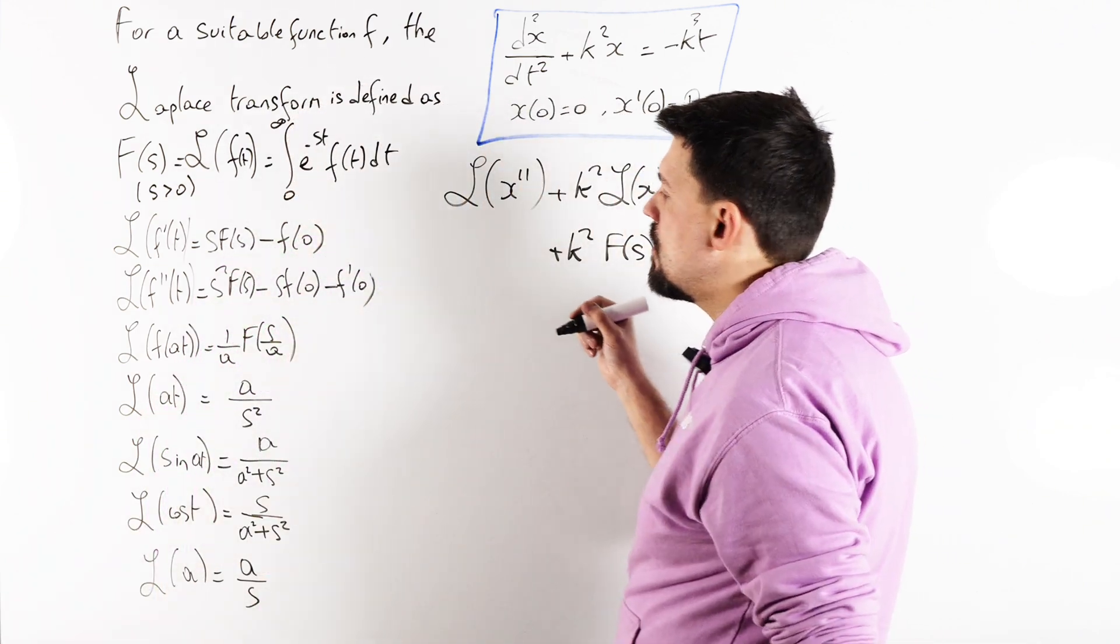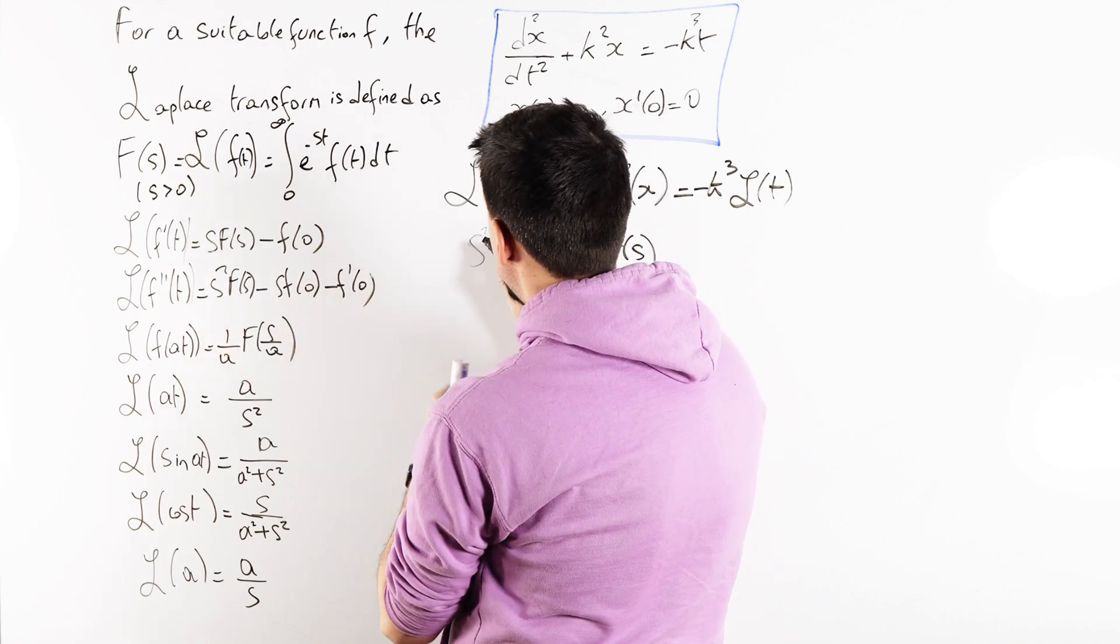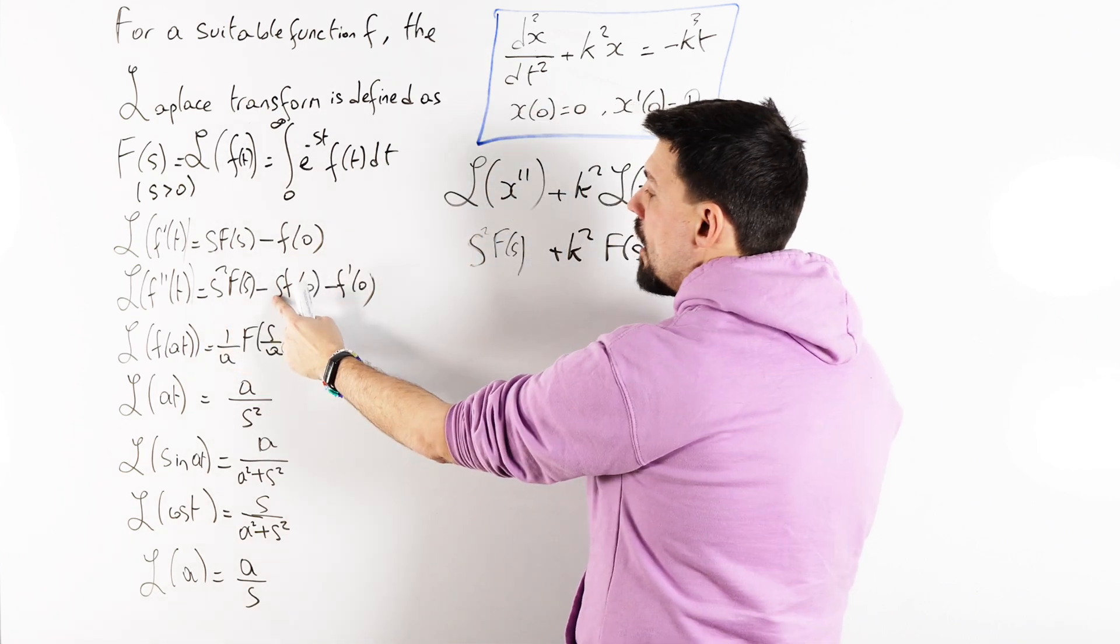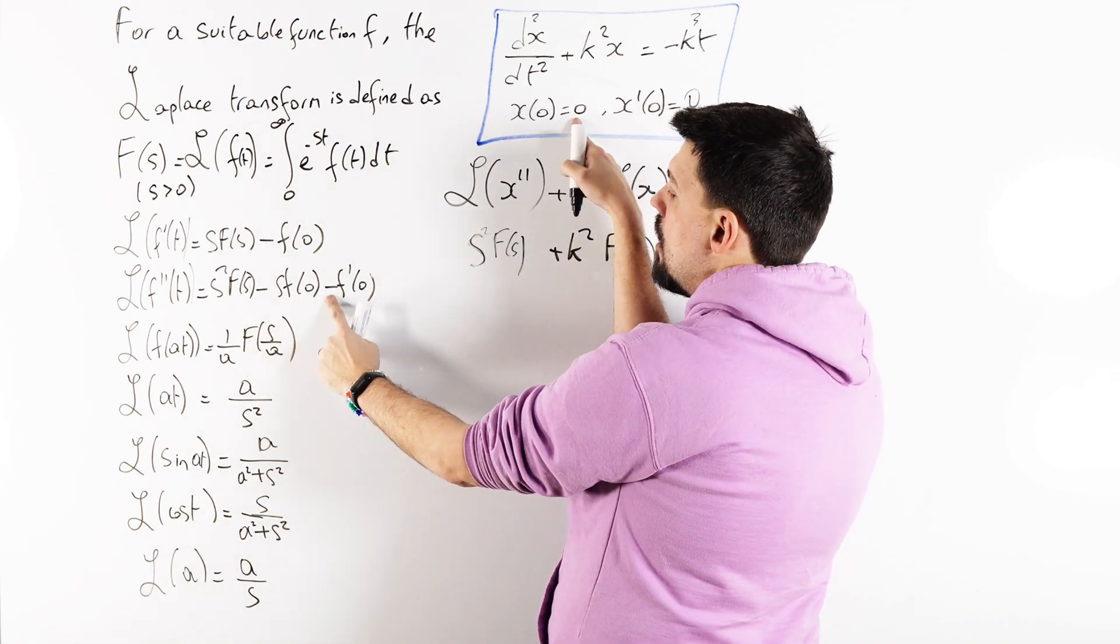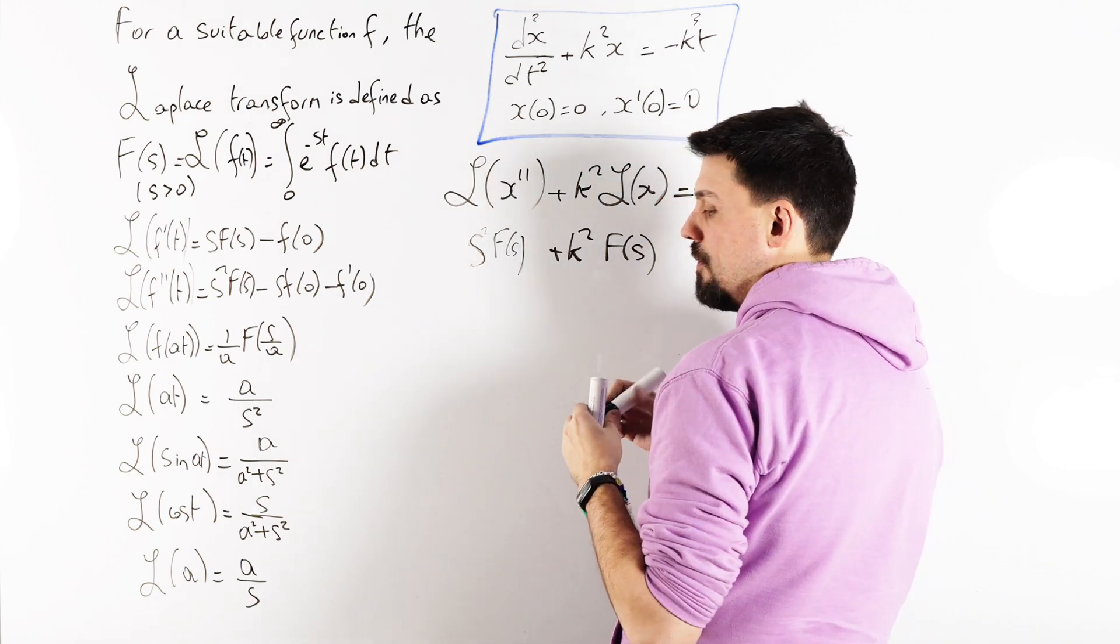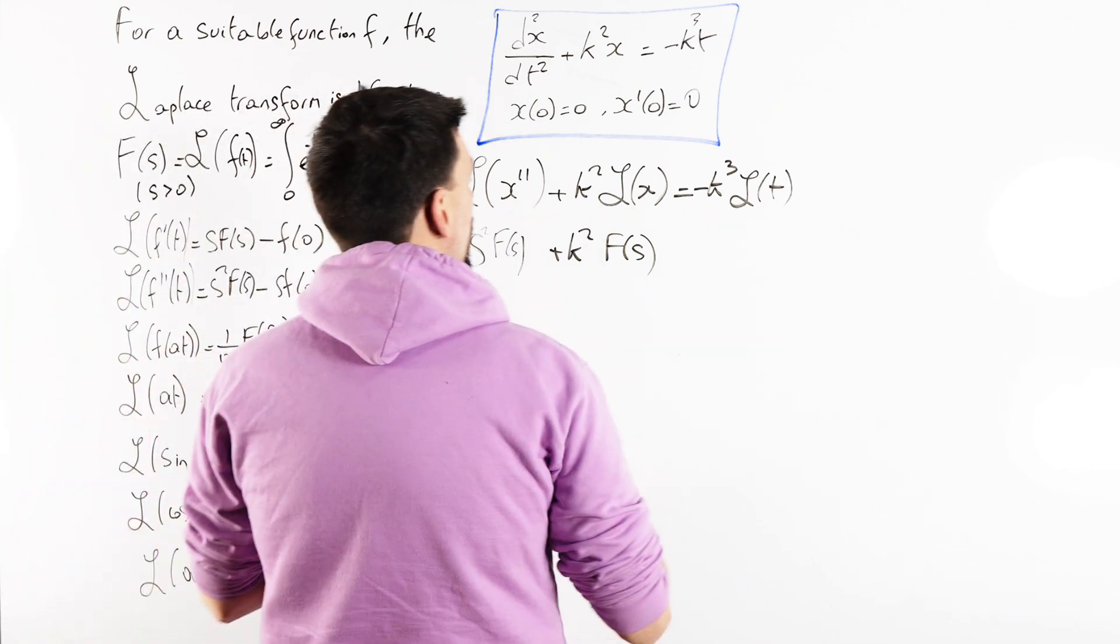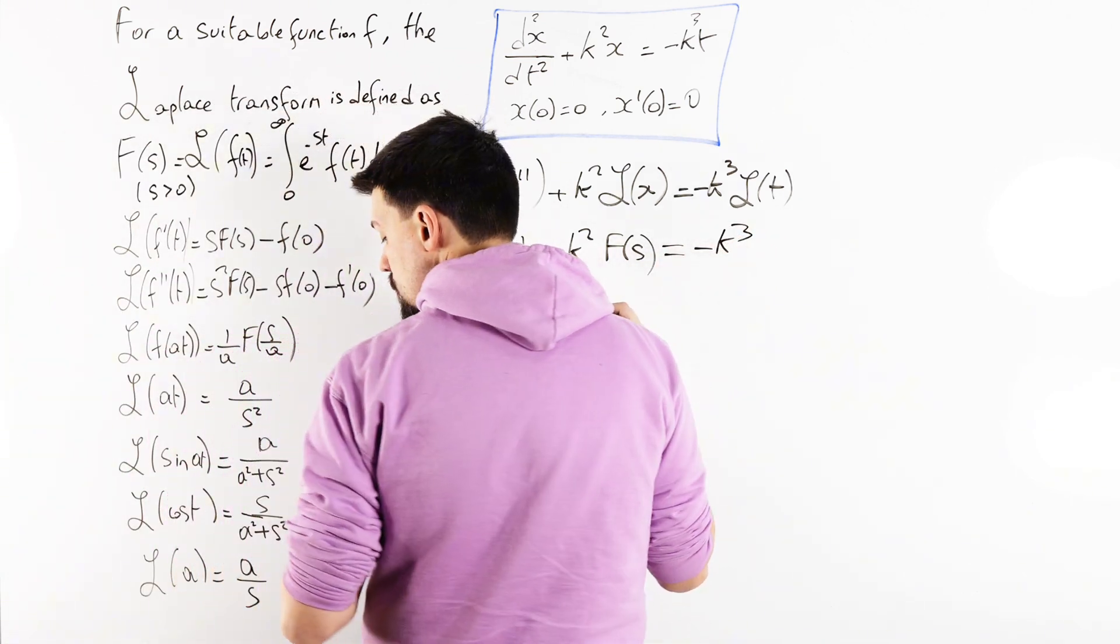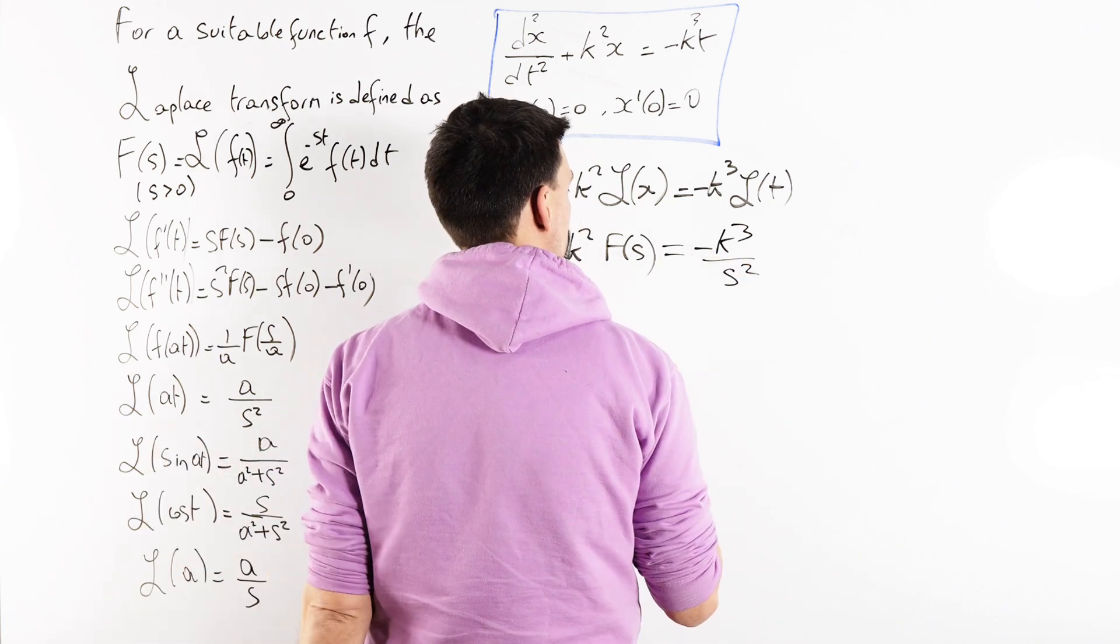Now, Laplace transformation of x double dashed is s squared f of s minus s times the function at zero, but the function at zero is zero, minus the gradient of the function at zero, which is just zero. So we just get s squared f of s. This pen is dying of death on me. And minus k cubed, and the Laplace transformation of t is 1 over s squared.